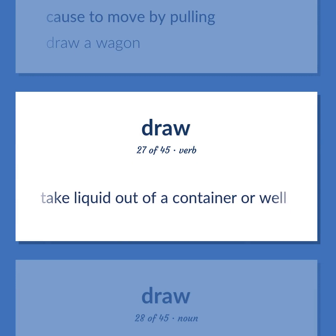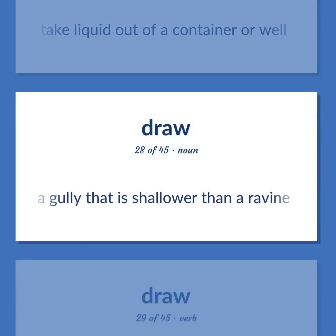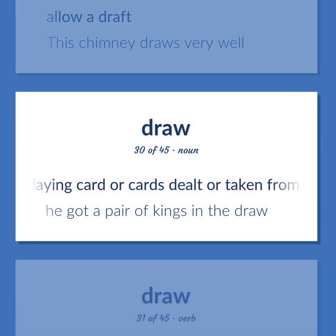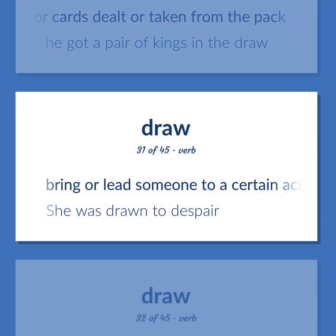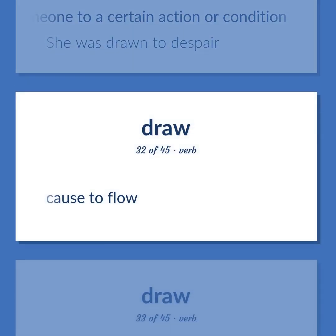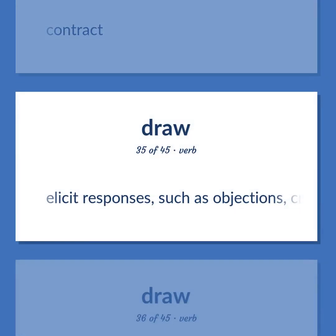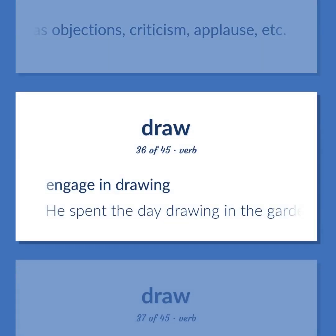Draw: to bring or lead someone to a certain action or condition — 'She was drawn to despair.' Also, to cause to flow. Also, to cause to localize at one point. Also, contract. Also, to illicit responses such as objections, criticism, applause, etc. Also, to engage in drawing — 'He spent the day drawing in the garden.' Also, to flatten, stretch, or mold metal or glass by rolling or by pulling it through a die or by stretching — 'Draw steel.'